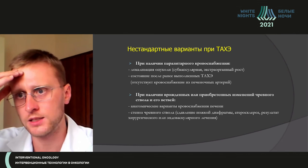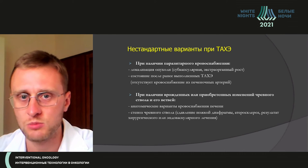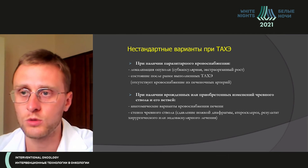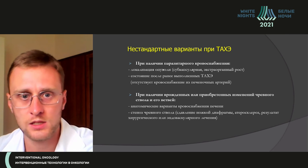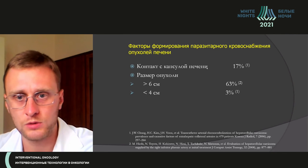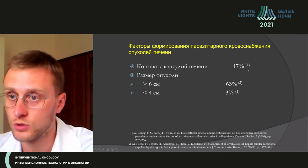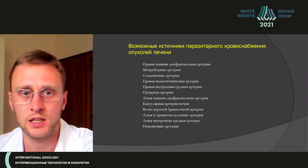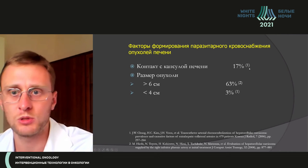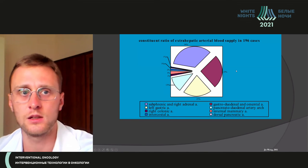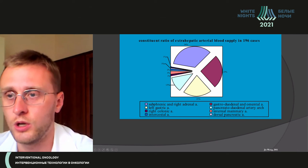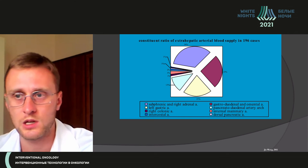An important point: trans-liver dissemination in classical guidelines is defined as involvement of any organ besides the bile. Parasite blood supply is commonly observed, especially in tumors larger than 6 centimeters — seen in 17% of cases. The most frequent source is the lower diaphragm artery, accounting for up to 23% of such cases.